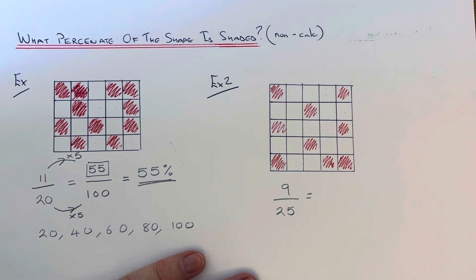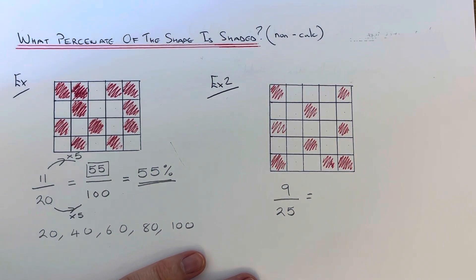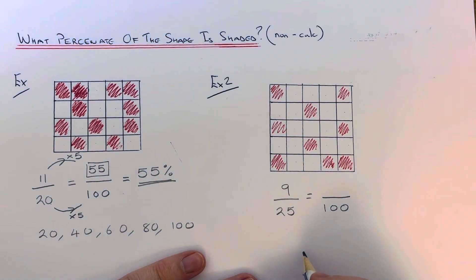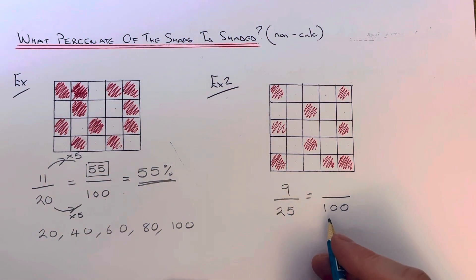So what we're going to do next is make an equivalent fraction out of 100, because the percentage means out of 100. So if we change the denominator to 100, we need to work out how many times 25 goes into 100. So let me just jot my 25 times table down.